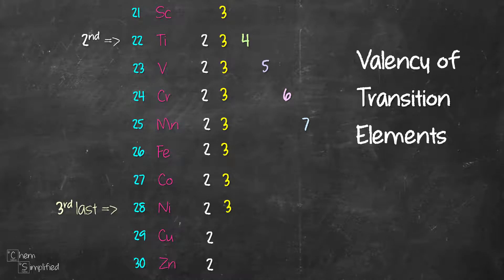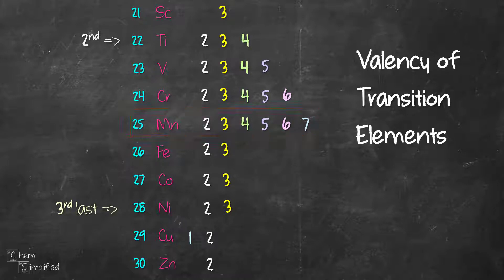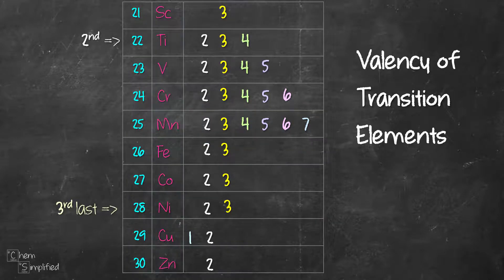Copper is the only one with a valency of 1. And then we go in and fill in the numbers. Element 23, vanadium, has a valency of 2, 3, 4, and 5. Element 24, chromium, is going to have a valency of 2, 3, 4, 5, 6. And element 25, manganese, is going to have a valency of 2 to 7. These are the valencies for the transition elements number 21 to 30.